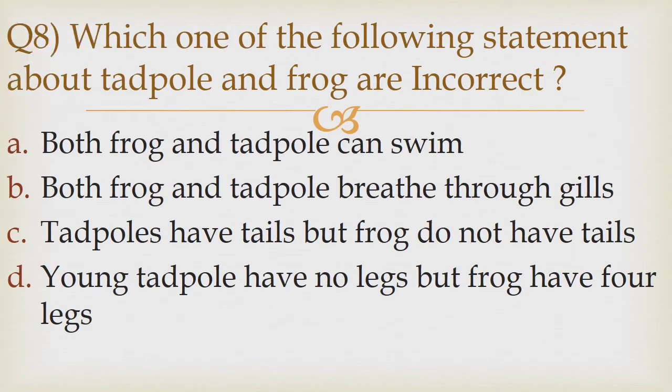Question 8: Which one of the following statements about tadpole and frog are incorrect? Option A both frog and tadpole can swim, option B both frog and tadpole breathe through gills, option C tadpoles have tails but frogs do not have tails, option D young tadpoles have no legs but frogs have four legs. The correct answer is option B both frog and tadpole breathe through gills.